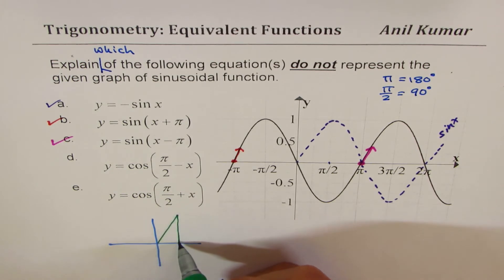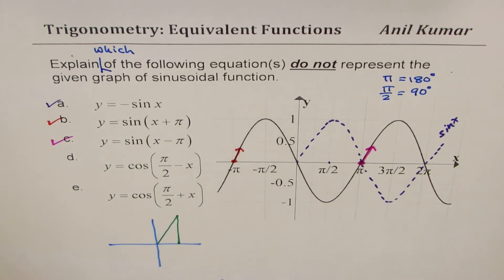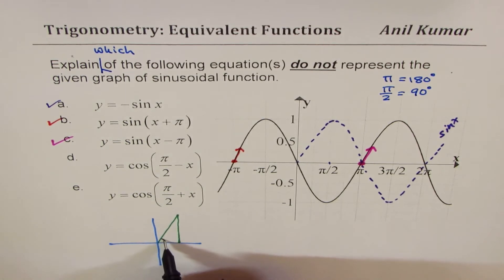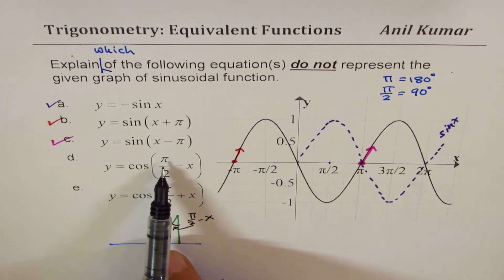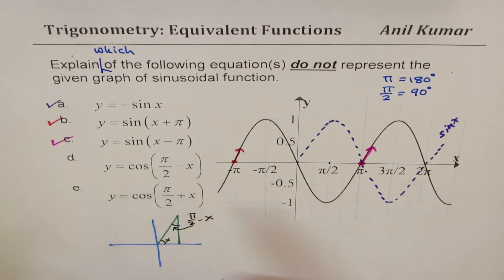Let's say triangle, let me make a triangle here, right. So if the angle is x here, then pi by 2 minus x will be this angle, right. So we are talking about this angle, 90 minus x or pi by 2 minus x. So cos of pi by 2 minus x is actually equal to sine x, okay.